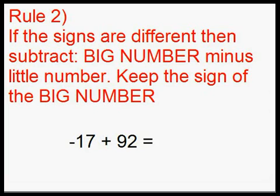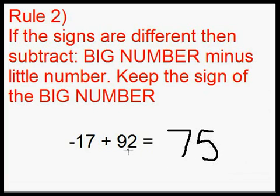Let me show you one more example for rule 2. Negative 17 plus 92. Again, the signs are different — we have a negative 17 and a positive 92. 92 is the bigger number, so we take 92 minus 17, and we get 75. The big number was 92, and in this case it was positive, so our final answer is positive 75. When you have a number just by itself, you don't write the positive sign in front.